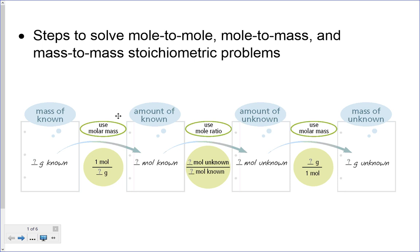This little chart down here shows the three conversions that we use. We always use the one in the middle — the mole-ratio conversion — where we get that conversion from the balanced chemical equation. So we're always going to use this ratio in our stoichiometric equations. Sometimes we will have to use the conversions on either end, and I'm going to go over those in the video today.